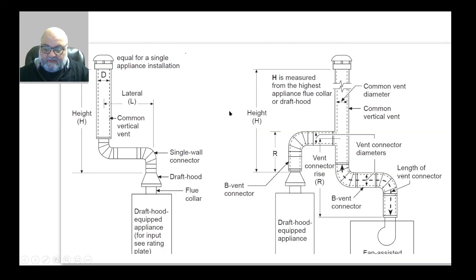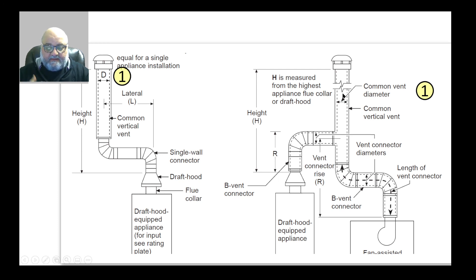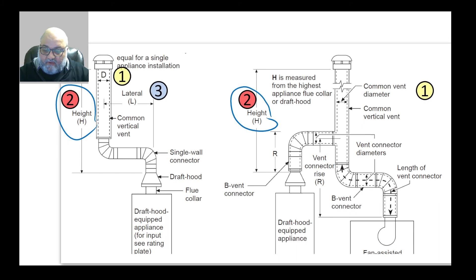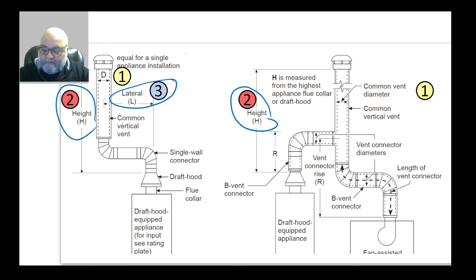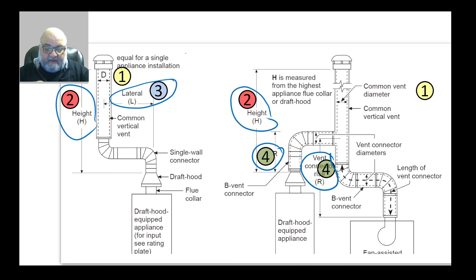For sizing purposes, there are four key measurements. Number one is diameter — that is what you are sizing, the unknown. The other three are given: height (in feet), lateral distance, and — if you have more than one appliance — the rise of each vent connector. For single-appliance applications you are given the lateral; for multiple appliances you are given the rise for each vent connector.